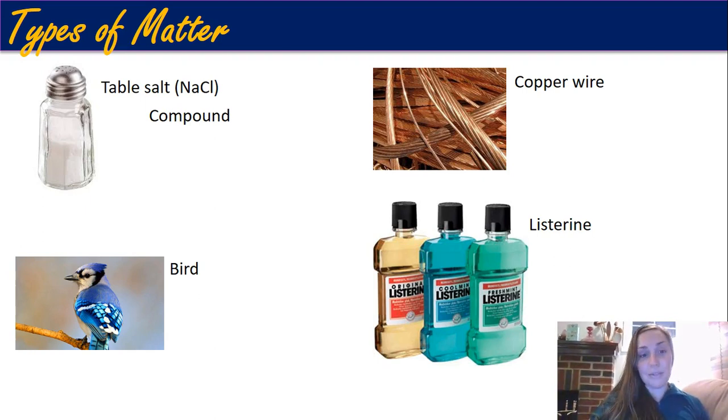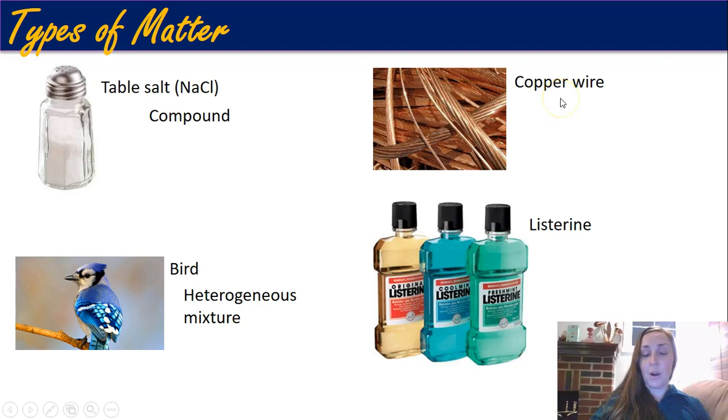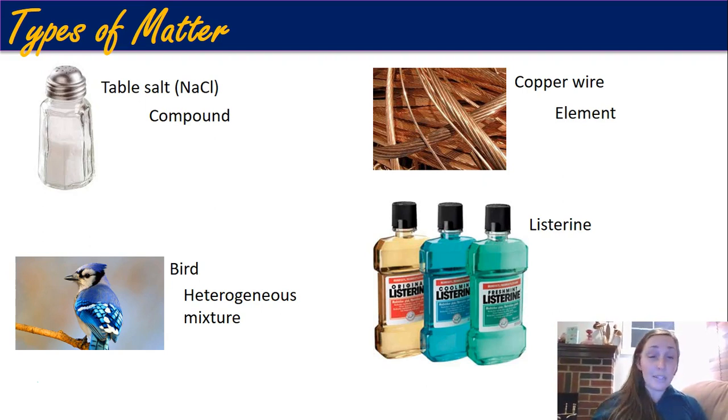It's yes for both of them, so this is a heterogeneous mixture. Anything alive is a heterogeneous mixture. Copper wire—alright, we start at the beginning. It doesn't look different throughout, and then you can't get different concentrations. Copper wire is copper wire is copper wire, so it's either an element or a compound. Well, copper is on the periodic table so it's an element. The wire kind of just throws you off because it's just talking about the form that it's in. It's not talking about the molecular composition.